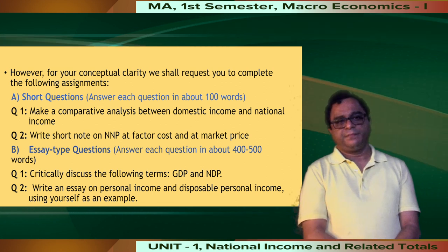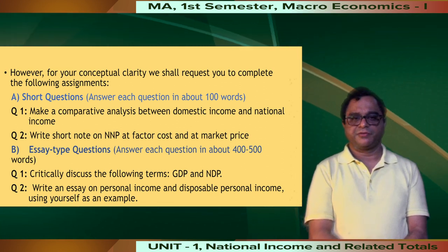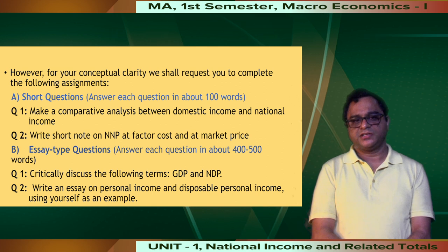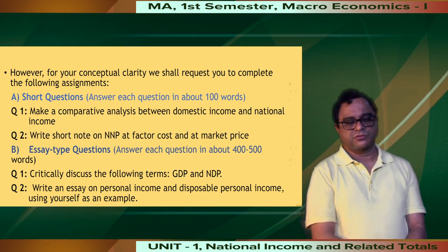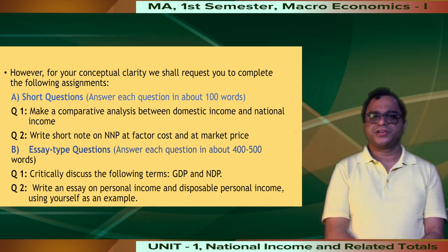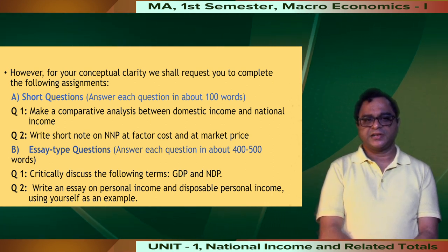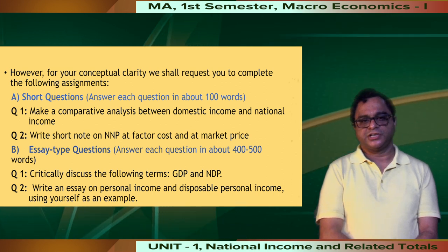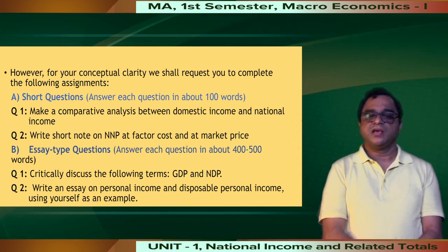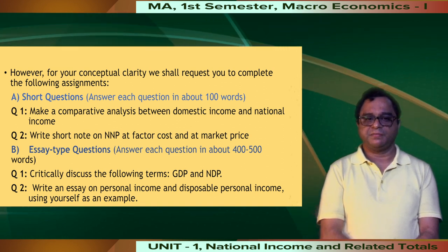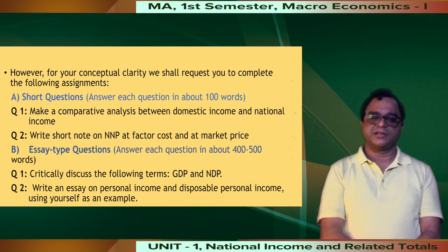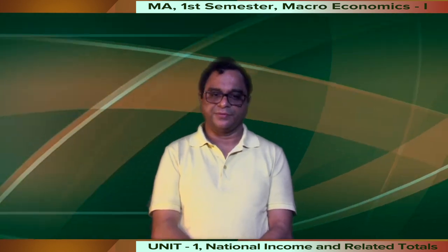We conclude the discussion of Unit 1 here. For your conceptual clarity, please complete the following assessments. Short questions to answer within 100 words: first, make a comparative analysis between domestic income and national income; second, write a short note on Net National Product at factor cost and market price. Longer questions to answer within 400 to 500 words: critically discuss GDP and NDP, and write an essay on personal income and disposable personal income using yourself as an example. In the next video, we shall take up Unit 2, which is on national income and real estate accounts. Thank you.